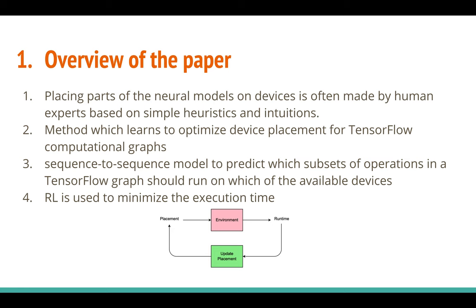The paper is designed to address device placement. For example, if you have 10 GPUs and a TensorFlow graph with convolution, max pooling, and other operations, you want to optimally place those operations onto the GPUs. Humans can do this manually — say, one LSTM layer per GPU — but the question is: what is the truly optimal placement that makes use of all resources to minimize execution time?